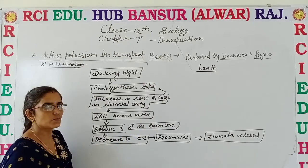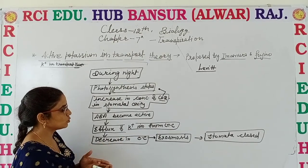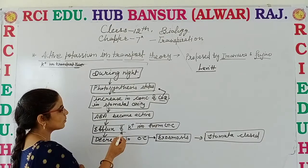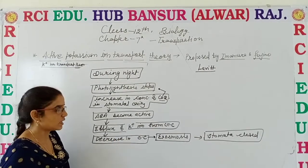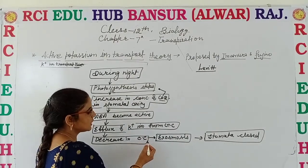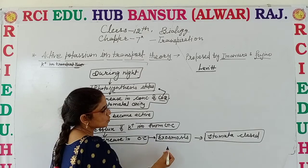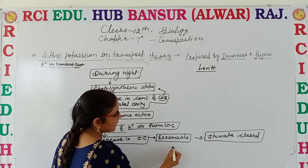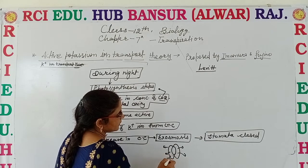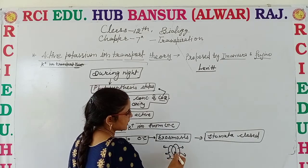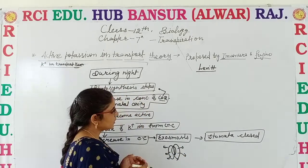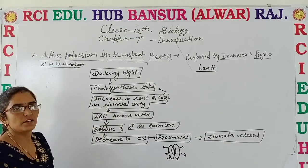Abscisic acid becomes active, and due to the activity of abscisic acid, efflux of K+ ions takes place from the guard cell. This is just opposite to the daytime, because during the daytime influx of K+ ions takes place. But here, efflux of K+ ions takes place from the guard cell. Due to that, there is a decrease in osmotic concentration, and due to the decrease in osmotic concentration, the process of exo-osmosis takes place. The guard cell releases water outside and they become flaccid. At the same time, as they become flaccid, the wall becomes straight and the stomatal pore gets closed. So this is all about the K+ Ion Transport Theory.